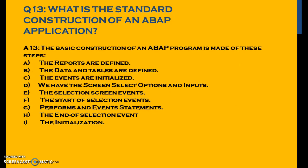What is the standard construction of an ABAP application? The basic construction of an ABAP program is made up of these steps: reports are defined, data and tables are defined, events are initialized, selection screen with SELECT-OPTIONS and inputs, selection screen events, START-OF-SELECTION events, PERFORM and event statements, END-OF-SELECTION event, and initialization.